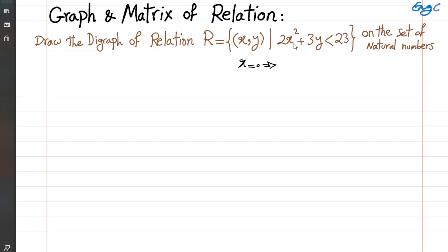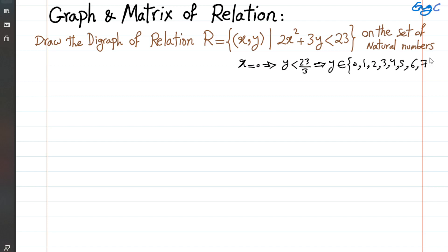If x equals 0, we substitute x with 0 and get y less than 23 divided by 3 as a non-negative integer, so valid choices for y would be less than 23 over 3, which means at most 7. So y belongs to the set {0, 1, 2, 3, 4, 5, 6, 7} — 8 valid choices given x is 0.